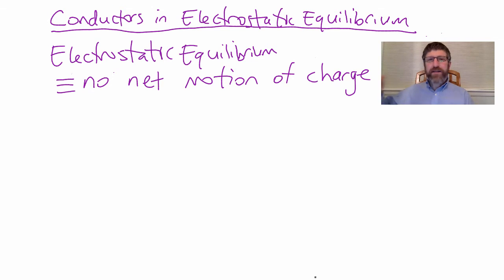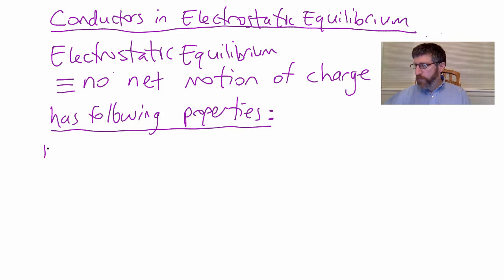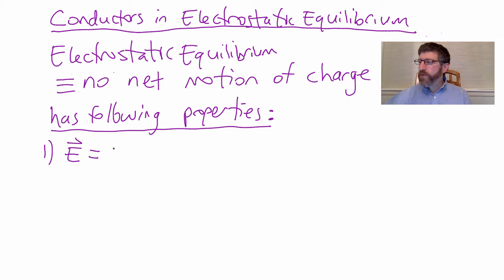When a conductor is in electrostatic equilibrium, meaning the charges are not flowing, it has the following properties. The first property is that the electric field within the substance of the conductor is equal to zero. This is from the last chapter, so hopefully you'll remember this — the electric field is equal to zero within the substance of the conductor.